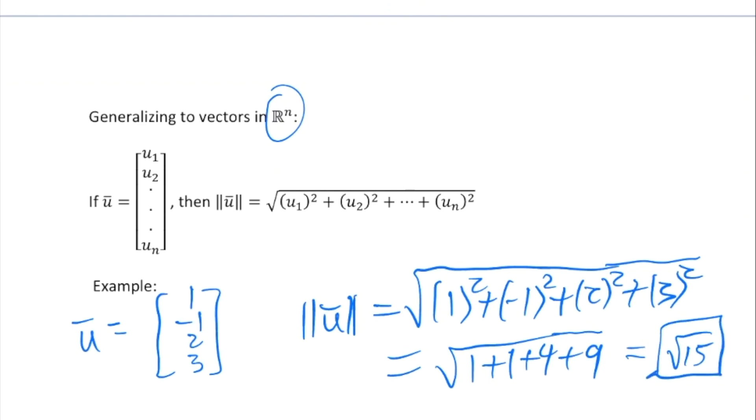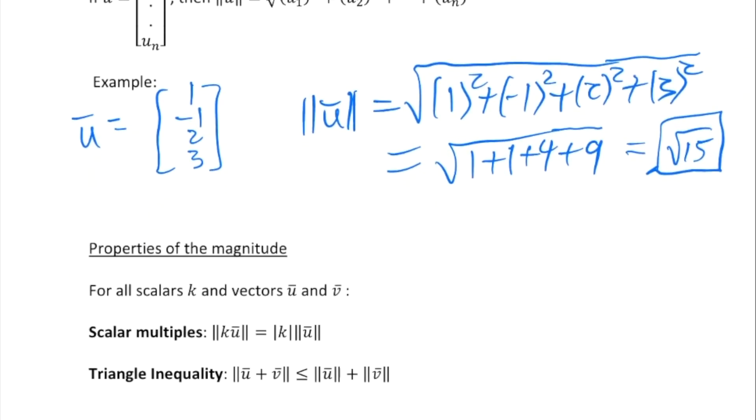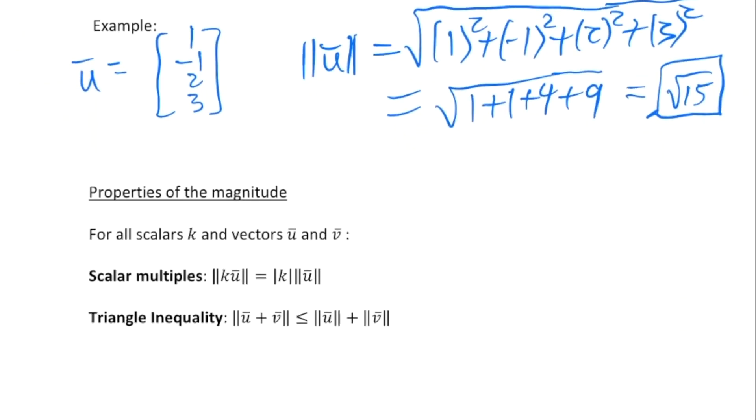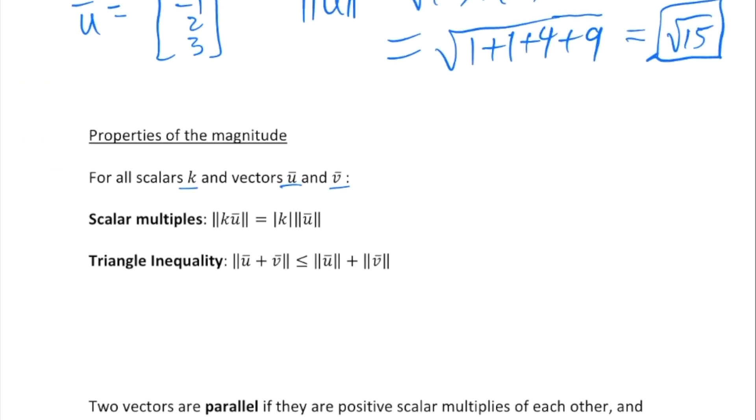Some properties of the magnitude: For all scalars k and all vectors u and v, you can prove the following. The magnitude of a scalar multiple of a vector is the absolute value of that scalar times the magnitude of the vector itself. If k is negative, you would indeed have to have that absolute value of k.